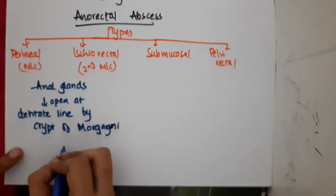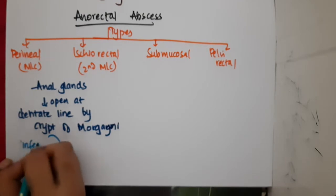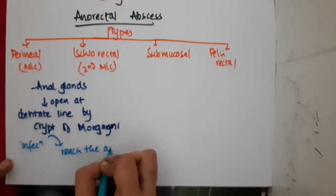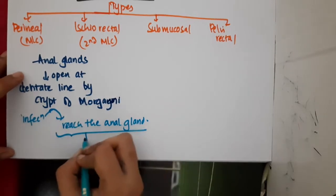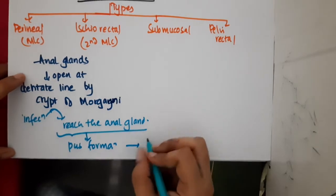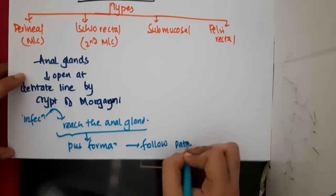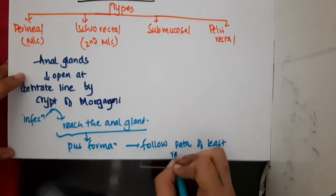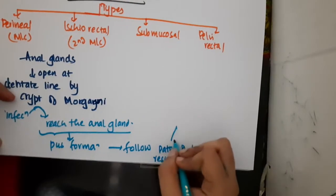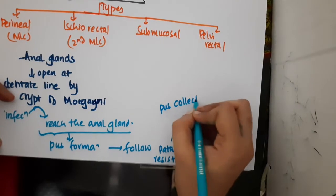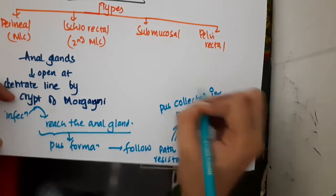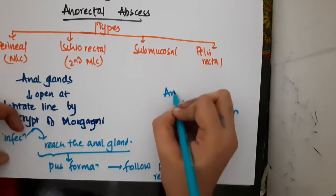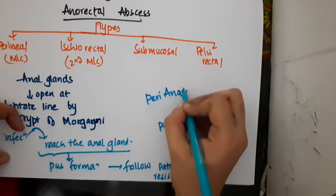Via this crypt of Morgagni, infection will reach the anal gland. Once there is infection in the gland, this results in pus formation. This pus will follow a path of least resistance. If the pus collects in the perianal region around the anus, it is called anorectal abscess or perianal abscess.